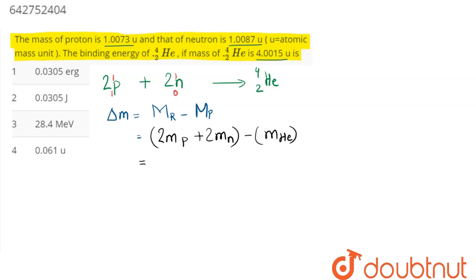So here we can say mass of proton is given in amu as 1.0073 amu plus 2 times mass of neutron is given as 1.0087 amu. So this is the mass of reactants minus mass of product is 4.0015 amu.